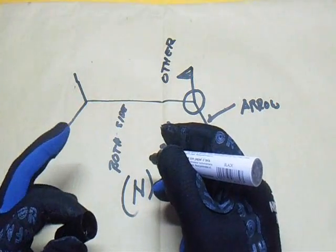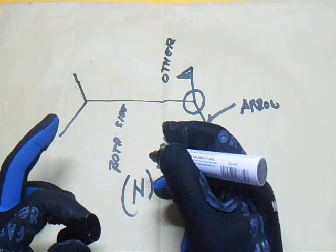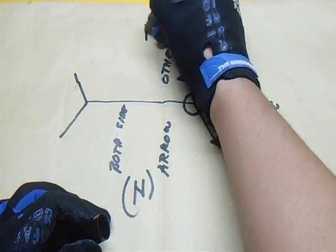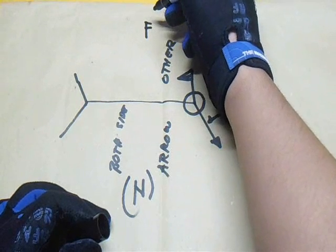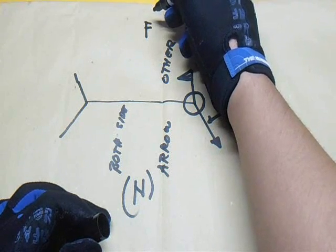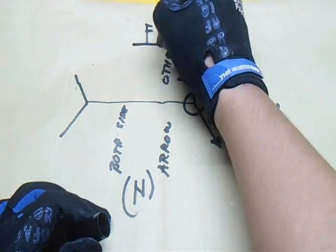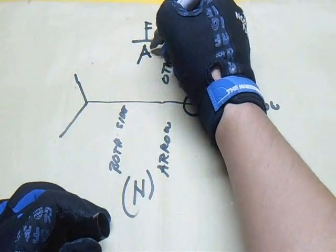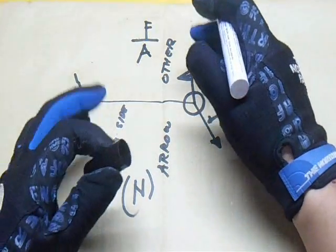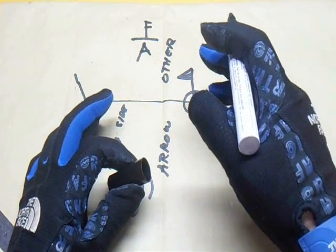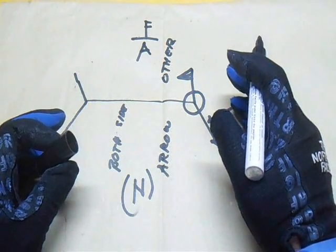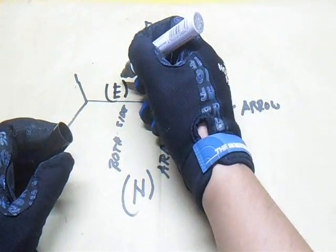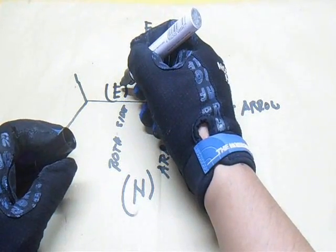We have N here. This N is the number of spot, seam, stud, plug, slot, or projection welds. We have F here. This F is a finish symbol. We have a contour symbol with this line. We have A here. This A is the groove angle, included angle of a countersink for flair welds. We have E. This is the groove weld size.